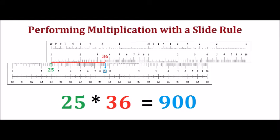How about 25 times 36? The process is literally identical to the one on the last screen. The only difference is that you must keep track of the decimal place in your head. This is one potential shortcoming of using a slide rule or log tables for that matter.